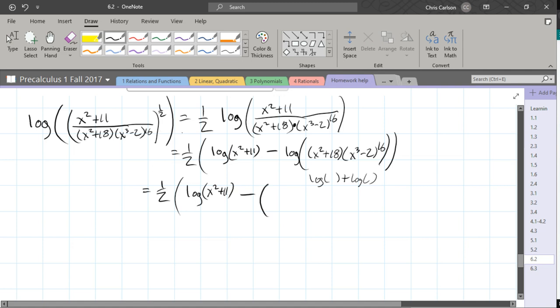But there's still a minus sign out front. So we got log of x squared plus 18 plus log x cubed minus 2 to the 16th. Alright, so we're getting there slowly.